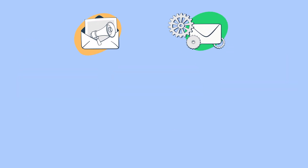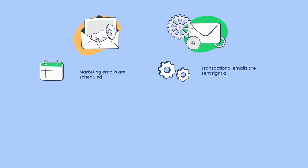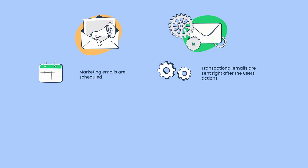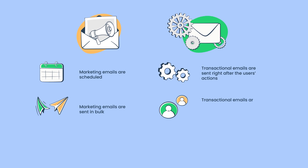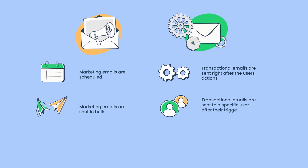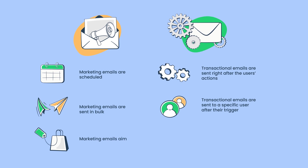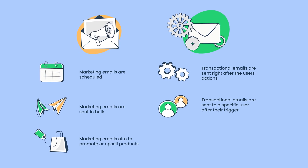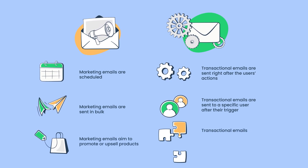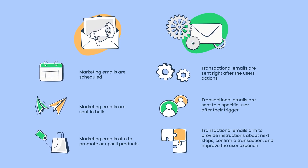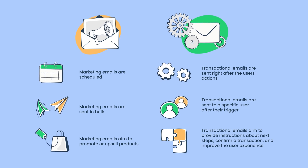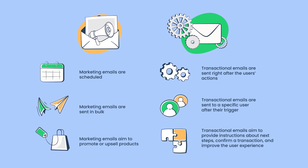So what's the difference between marketing and transactional emails? Marketing emails are usually scheduled, while transactional emails are triggered right after the user's actions. Marketing emails are usually sent in bulk, whereas transactional emails are sent to a specific user in response to their trigger. Marketing emails aim to promote or upsell products or services, while transactional emails aim to provide instructions about the next steps, confirm a transaction, and improve the user experience.